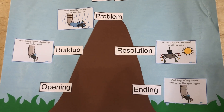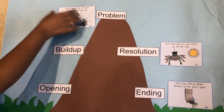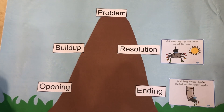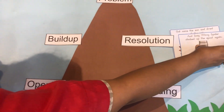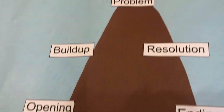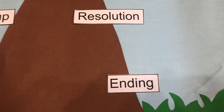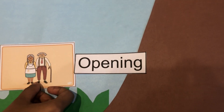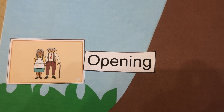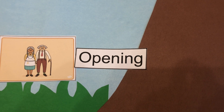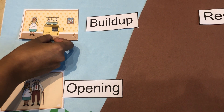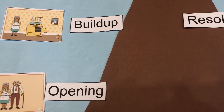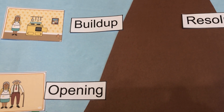We can also engage the children by looking at simple and familiar fairy tales. For example: there lived an old man and an old woman who longed for a child of their own. The old woman decided to make a boy of her own using gingerbread.